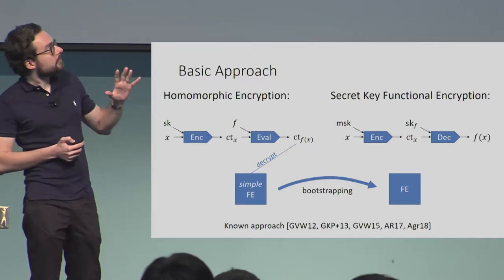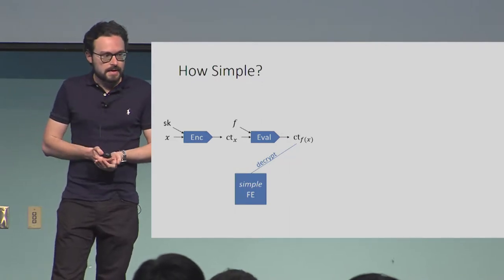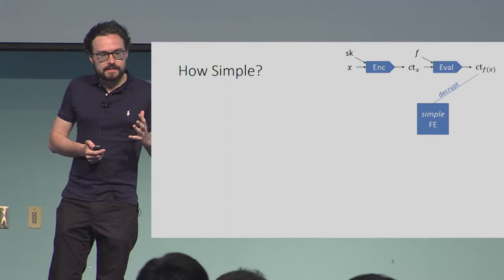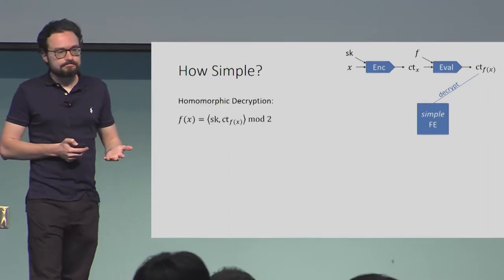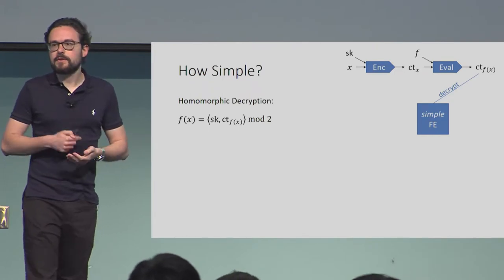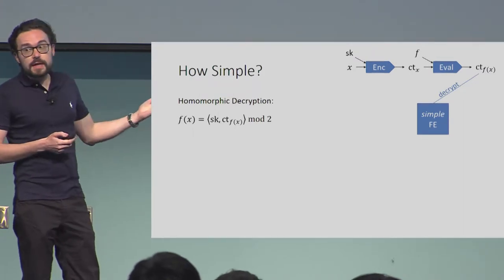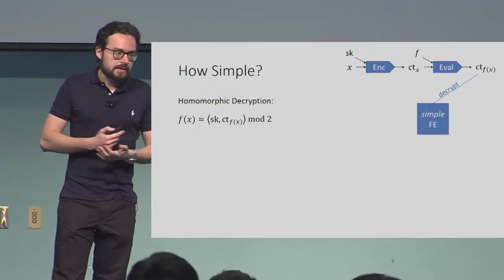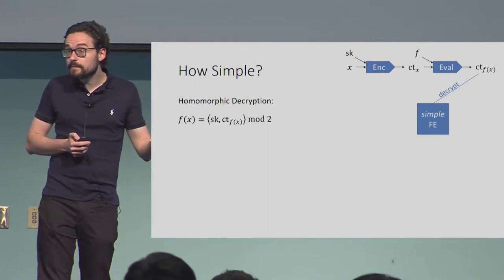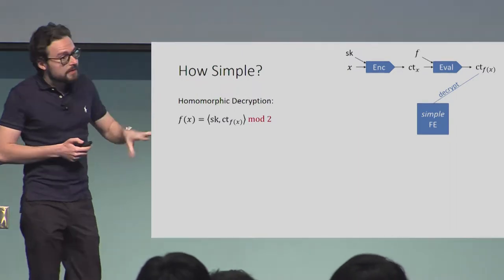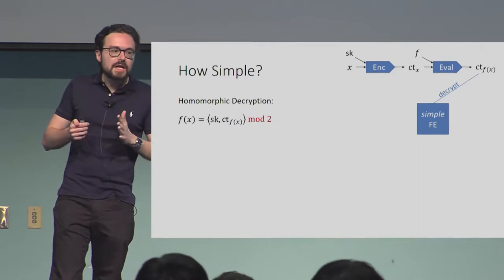The crucial question is how simple this FE scheme can be — the simpler the better. What it essentially needs to do is evaluate the decryption of a homomorphic encryption scheme. Luckily, there are LWE-based homomorphic encryption schemes that have a very simple decryption: they essentially just compute an inner product, and then if we encrypt bits, reduce modulo 2. The inner product is very simple. Modulo 2 in principle is also simple, but not if you want to express it as a polynomial of low degree.